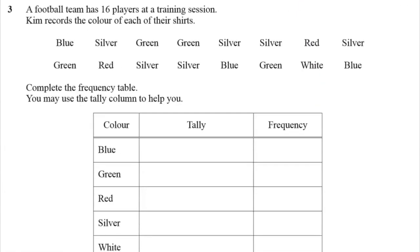A football team has 16 players at a training session. Kim records the color of each of their shirts. Complete the frequency table. You may use the tally column to help you. I'm definitely using the tally column. Let's cross them off as we go. Blue, silver. See, this green is perfect. Green, tally. Tally is so useful.